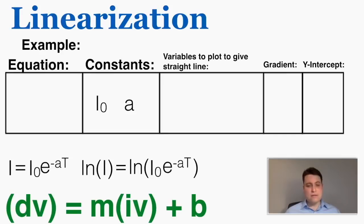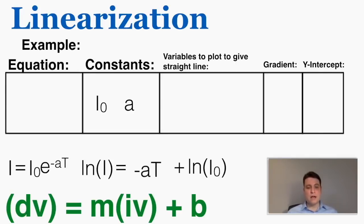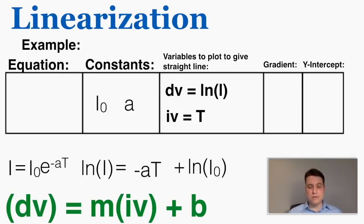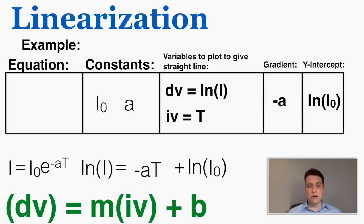Remembering rules about natural log from math class, this is equal to the natural log of i₀ plus negative a times capital T. I can see that this is basically in a linearized form: my dv is ln(i), it's equal to some constant negative a times variable T, plus another constant which is the natural log of i₀. So my dependent variable is ln(i), my independent variable is capital T, the gradient is negative a, and the y-intercept is the natural log of i₀. You don't have to have any idea what these numbers are actually talking about in order to linearize them — in most labs, you'll start by linearizing a function and later use the lab to understand what these numbers mean.